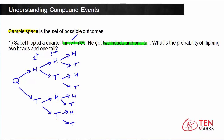So now let's go in here and count the sample space, since this is the third toss. The sample space will be the number of events here. So let's count them out. If you count, you have one, two, three, four, five, six, seven, eight. So the sample space is eight. And we're going to keep that in mind when we go to find this compound probability.